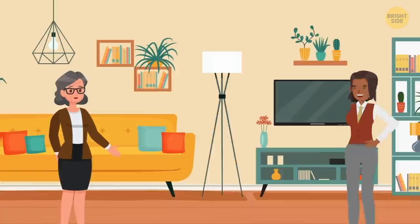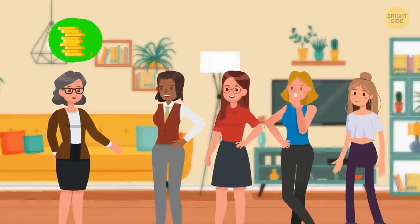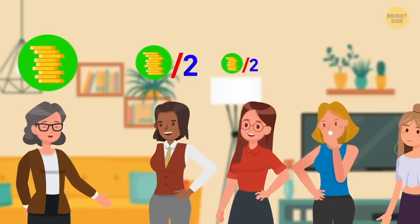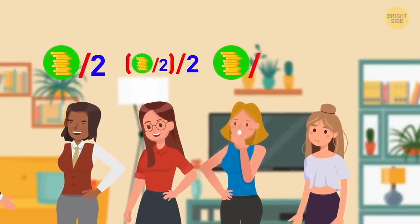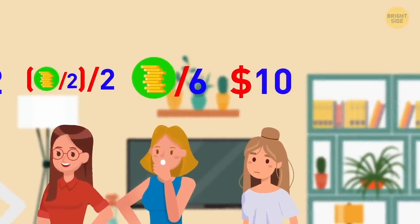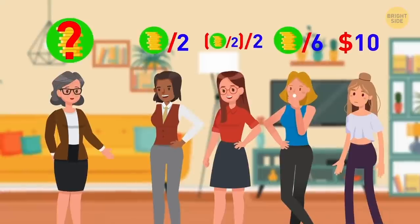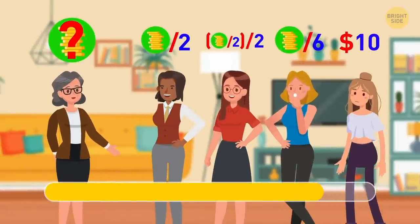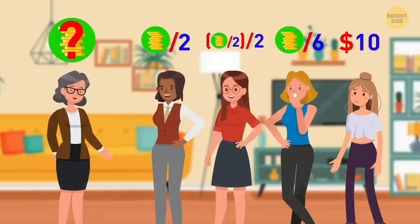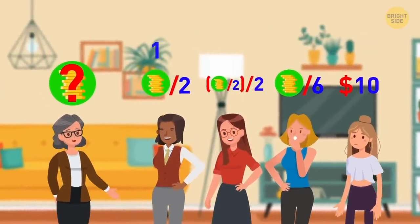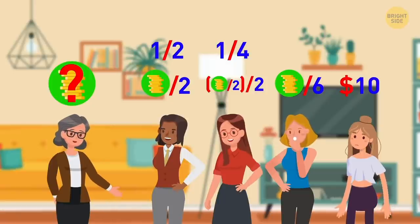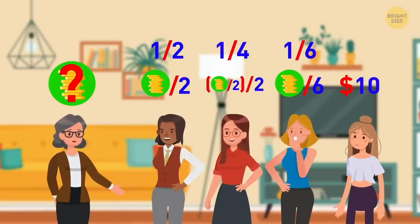Every Sunday, Mrs. Adams gives her daughter's pocket money. Half of the whole amount goes to the oldest daughter, Stella. The second sister, Ashley, gets half of the amount Stella gets. Eleanor gets one-sixth of the total amount. And the remaining $10 goes to the youngest daughter, Sierra. How much money does Mrs. Adams give away? Seems like Stella gets one-half of the money. Ashley gets half of a half, which is one-quarter of the original sum. And Eleanor gets one-sixth. They're all a fraction of twelves.